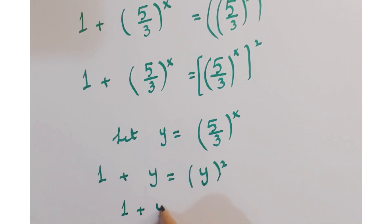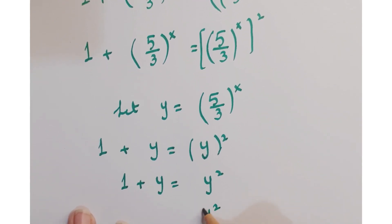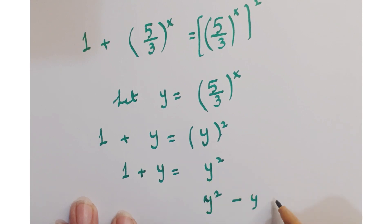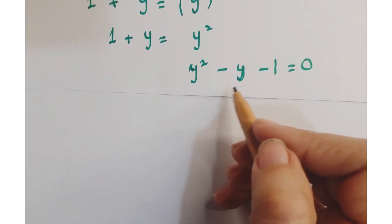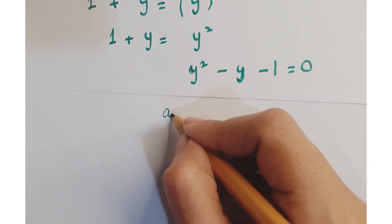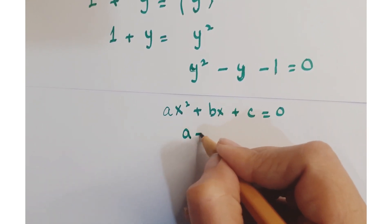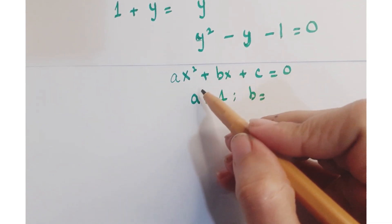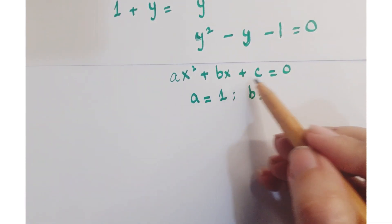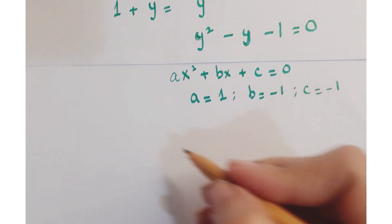You can write it as 1 plus y equals y squared. Taking these terms to the right-hand side, you have y squared minus y minus 1 equals 0. Now comparing this quadratic equation with the standard quadratic equation Ax squared plus bx plus c equals 0: a is 1, b is minus 1, and c is minus 1.